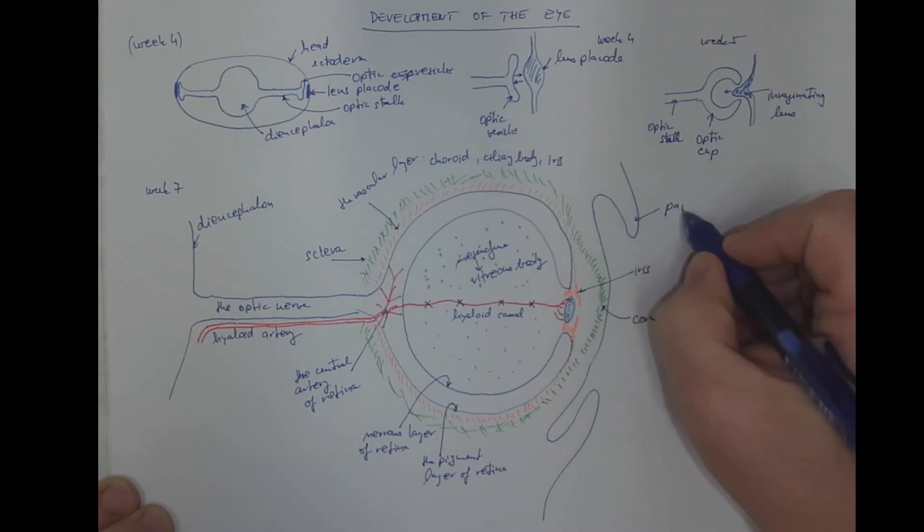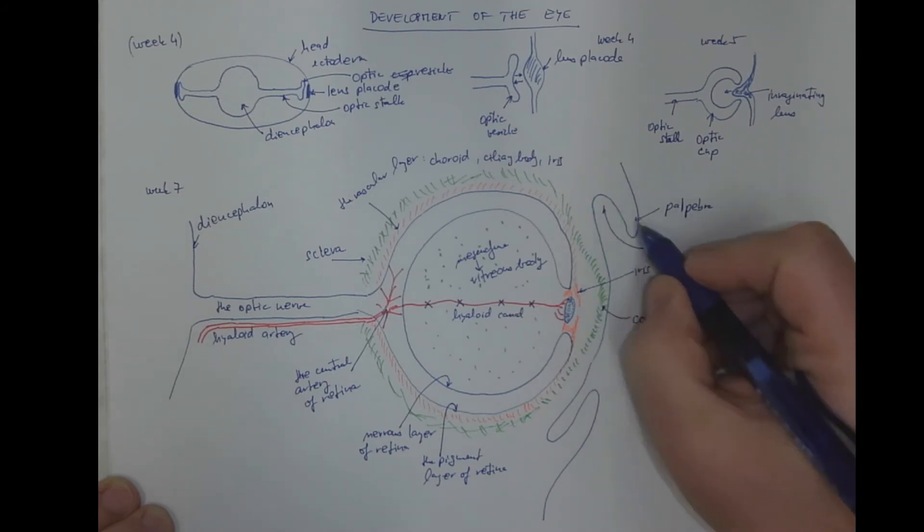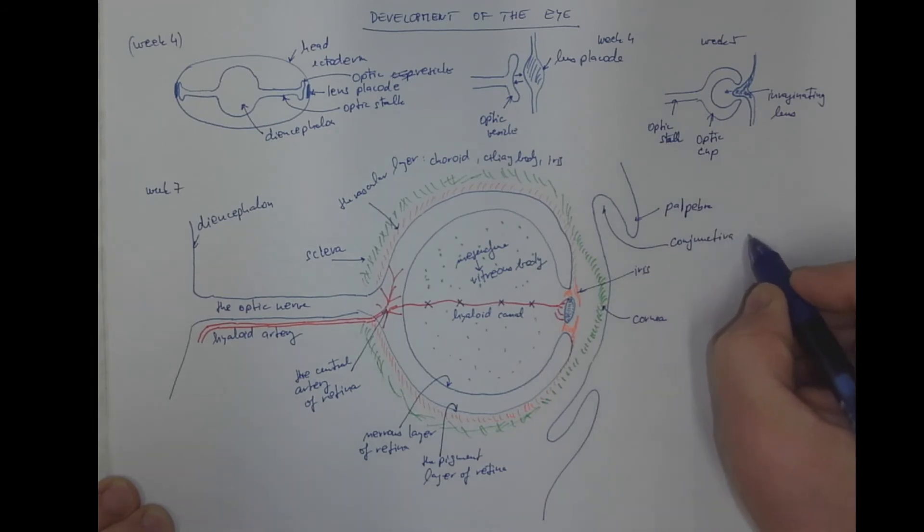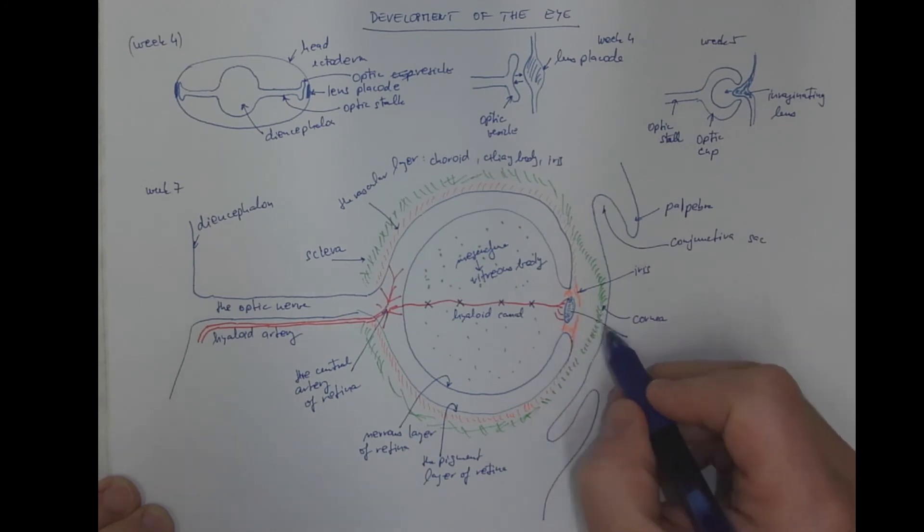This is the palpebra, the conjunctiva sac. Here we have the lens, which we know is of ectodermal origin.